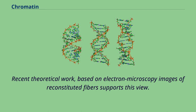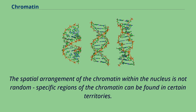Different lengths of the linker DNA should produce different folding topologies of the chromatin fiber. Recent theoretical work, based on electron microscopy images of reconstituted fiber, supports this view. The spatial arrangement of the chromatin within the nucleus is not random; specific regions of the chromatin can be found in certain territories.